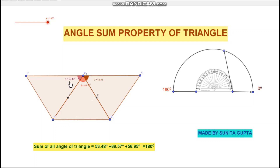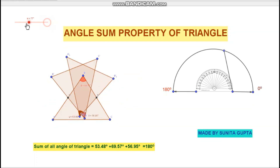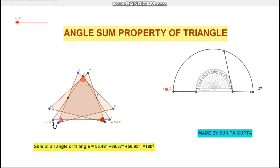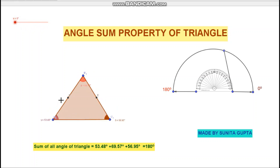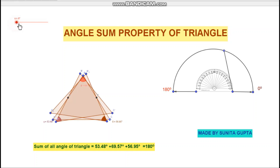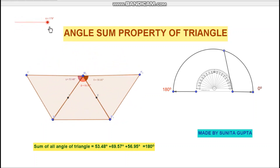If we look at the current angles, they are 53.48, 69.47, and delta is 59.95. The sum of these three angles — 53.48, 69.57, and 69.57 — totals 180 degrees, confirming the triangle angle sum property as a form of linear pair.